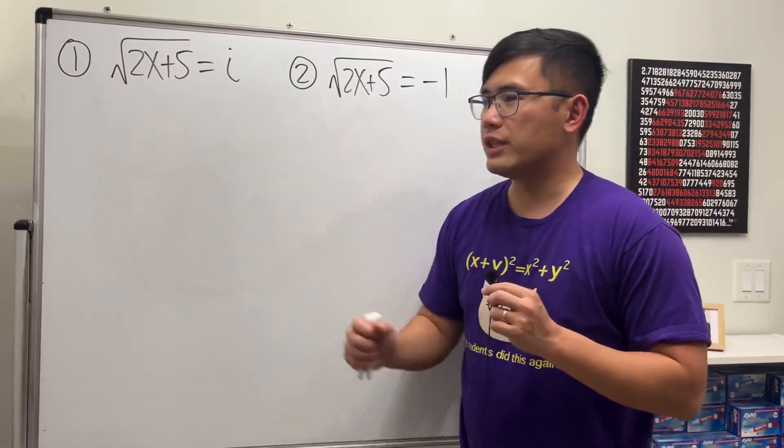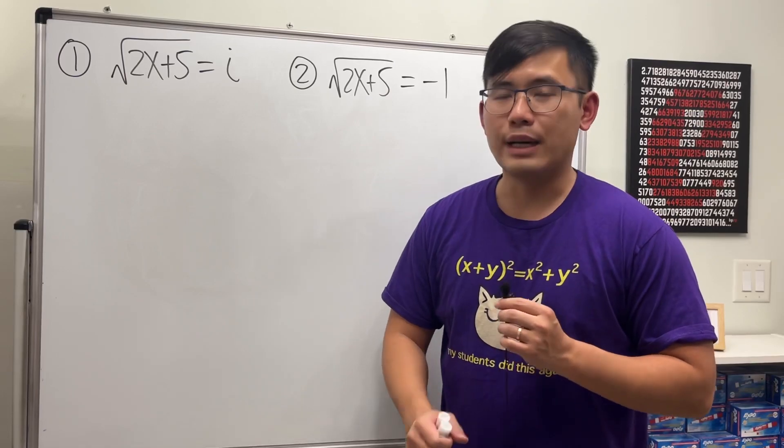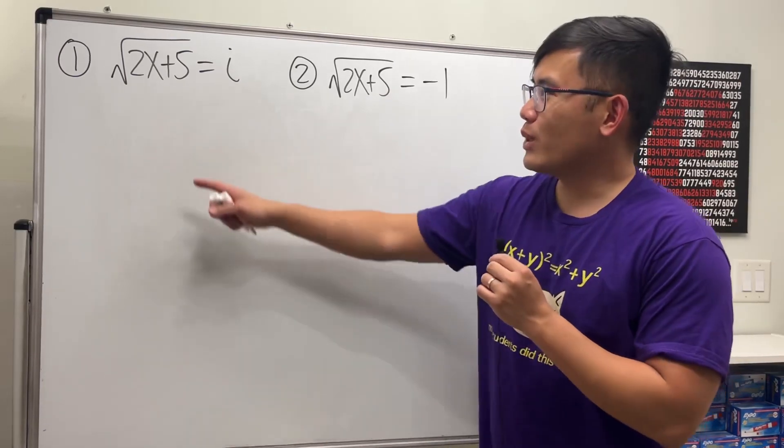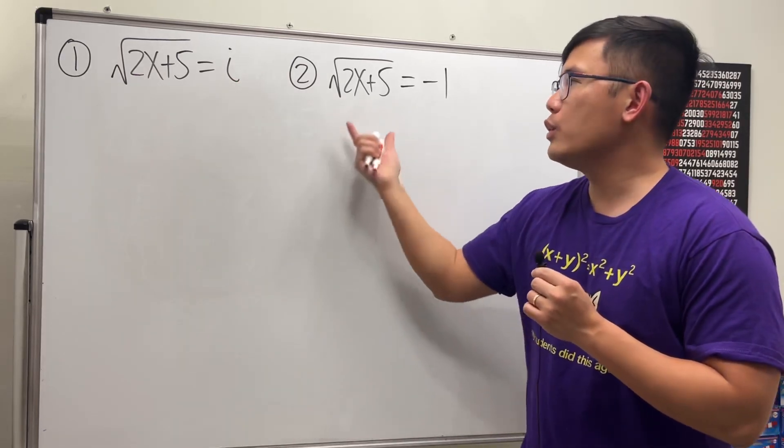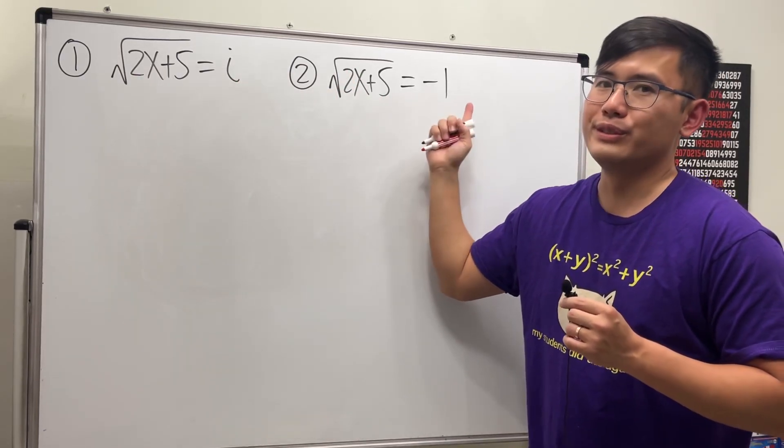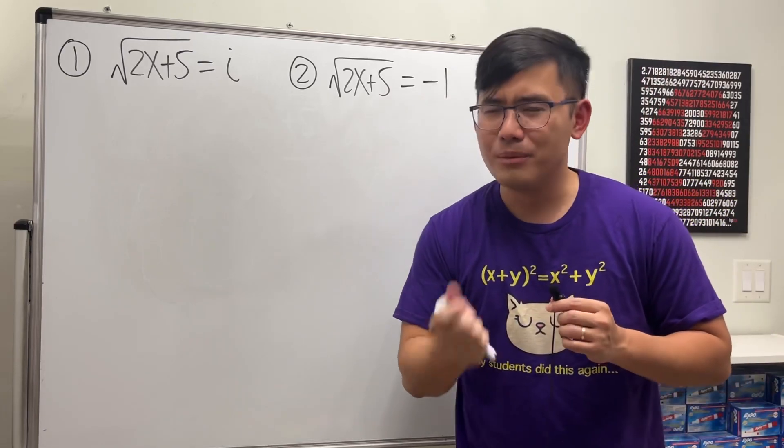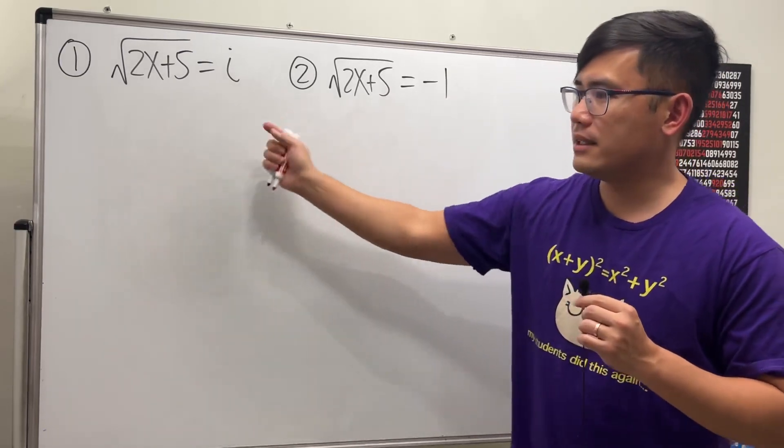Alright, now these two equations look similar but they're also pretty tricky. The first one is the square root of 2x plus 5 equals i, and for the second one we have the same square root but this time it's equal to negative 1. Please pause the video and try these two questions first.